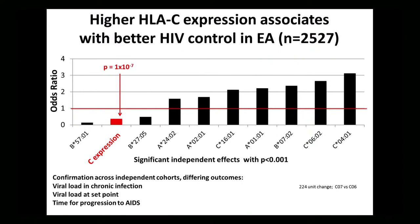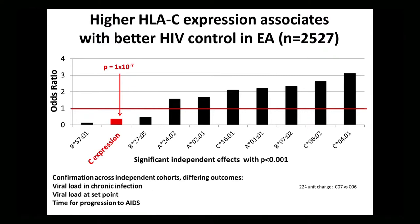Some of these outcomes are completely independent of one another. And as you have seen as well, we're seeing effects of specific HLA alleles across distinct cohorts. We're seeing this also in African Americans, so across different populations, higher HLA-C expression confers protection. We see it across different outcomes of HIV infection and across populations.